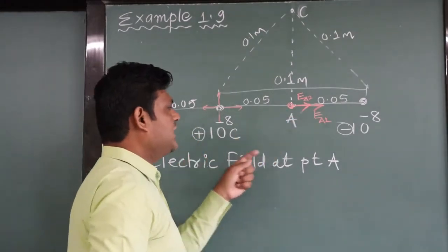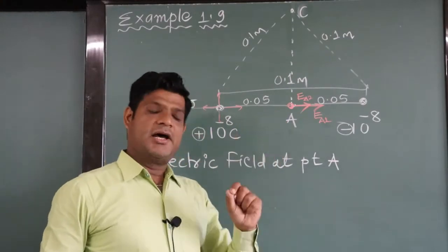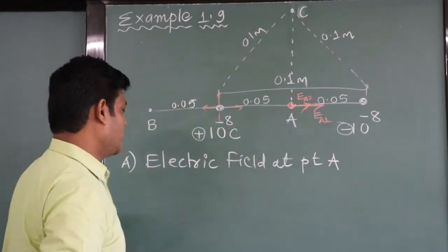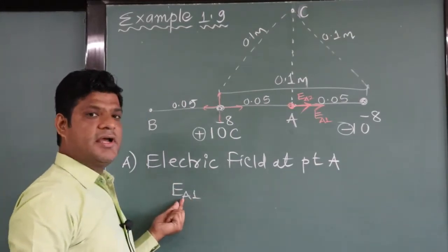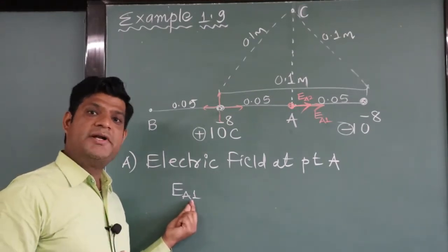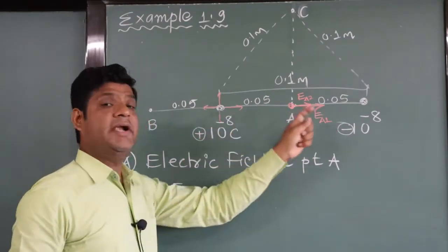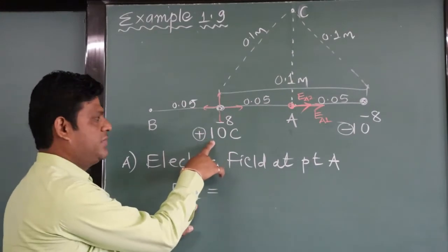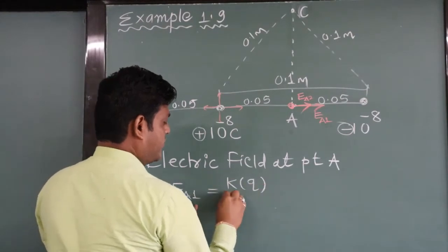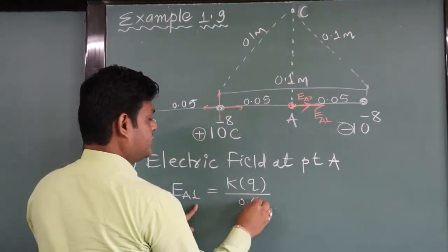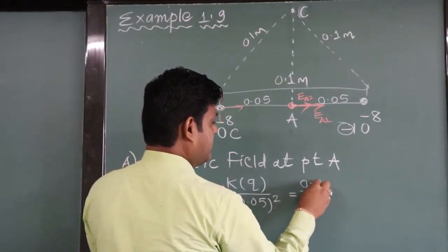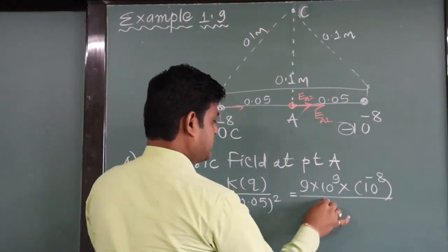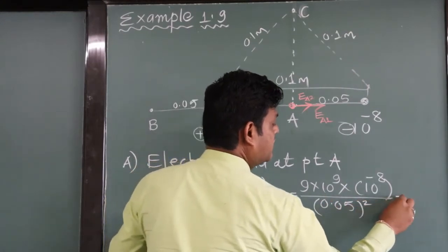This is the direction decided using plus Q and minus Q. Now we calculate the magnitude of electric field at point A due to charge 1. E A1 equals k q divided by distance squared, distance is 0.05 bracket squared. Putting values: 9×10⁹ multiplied by 10 to the power minus 8, divided by 0.05 bracket squared. Solve this to get the answer.